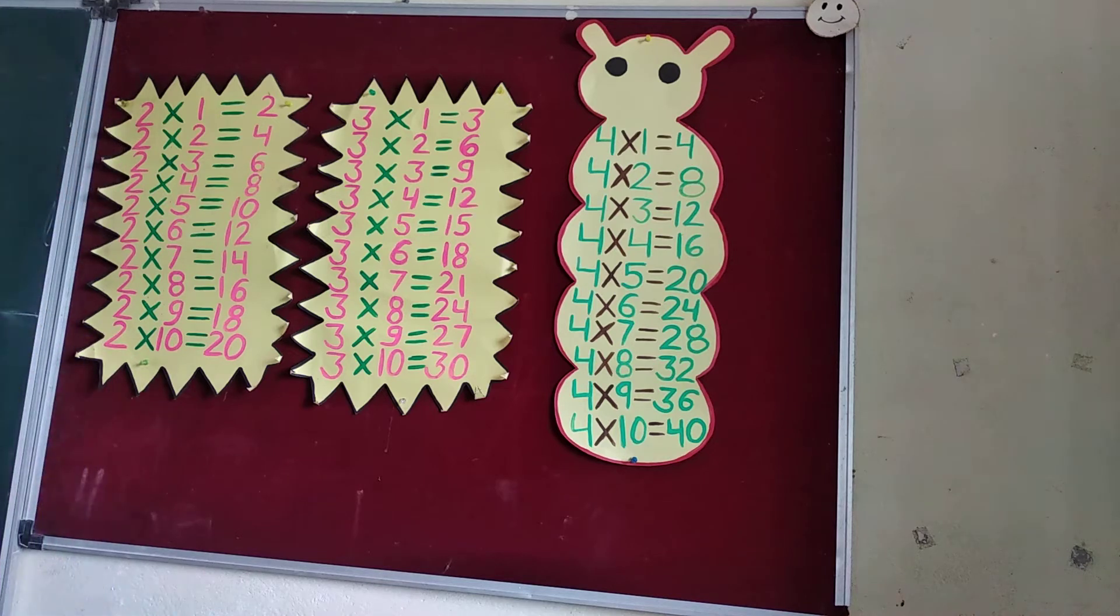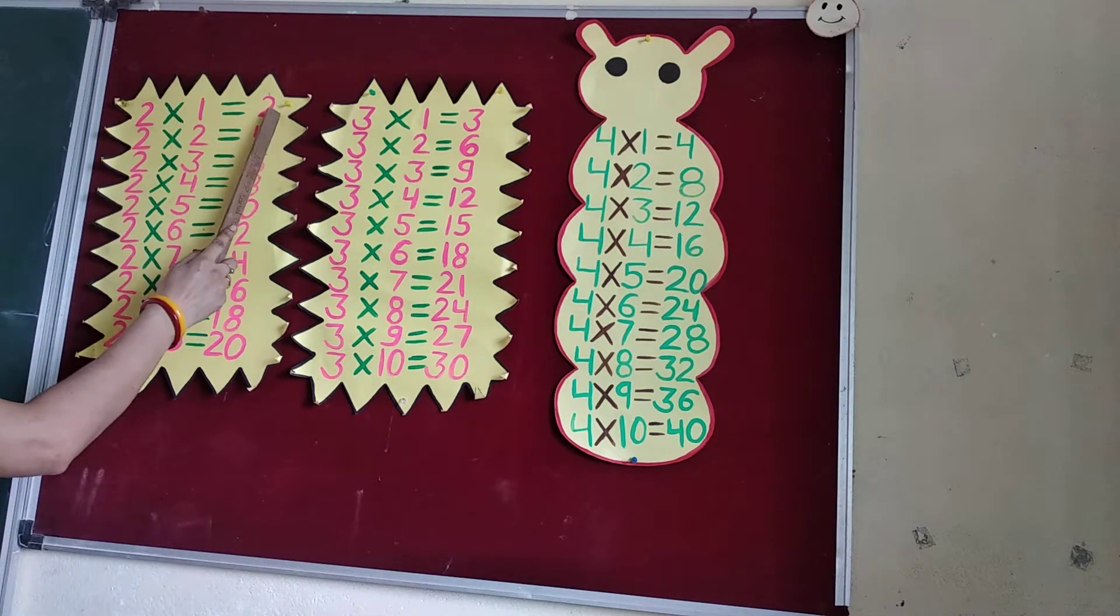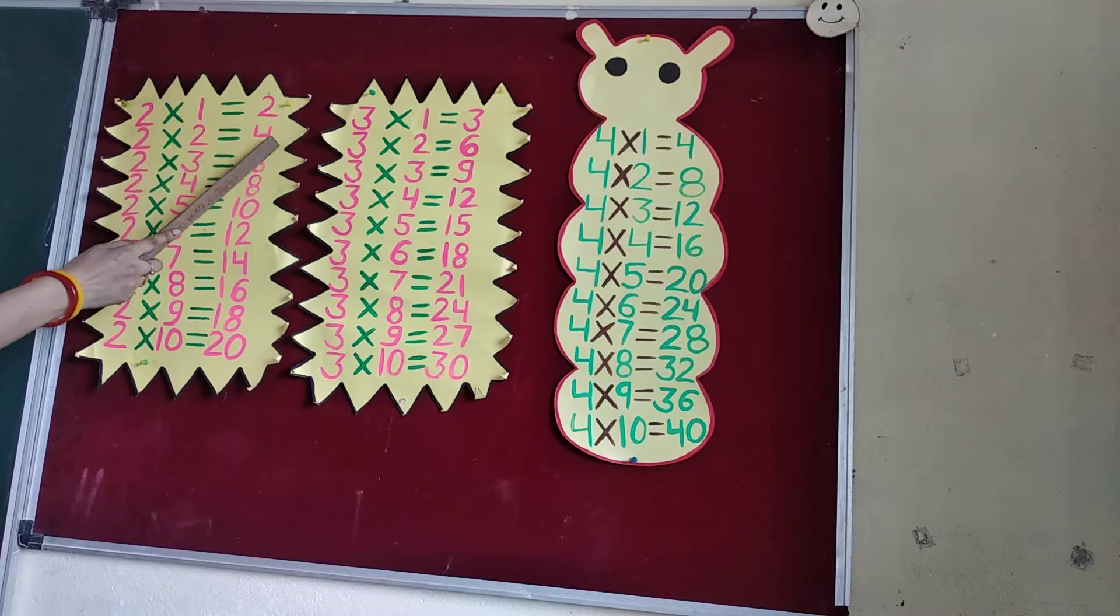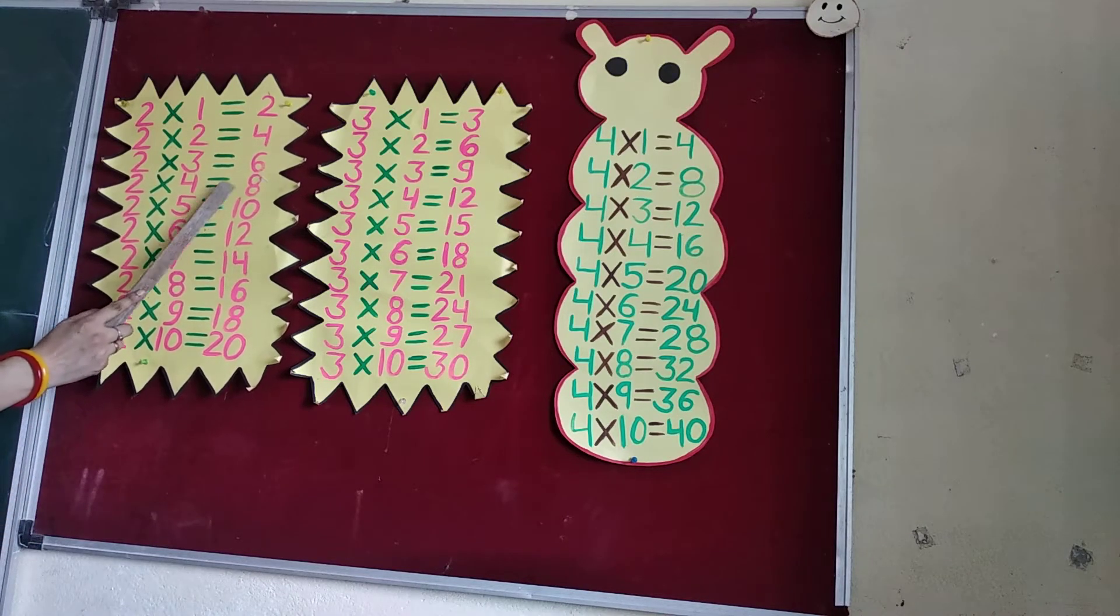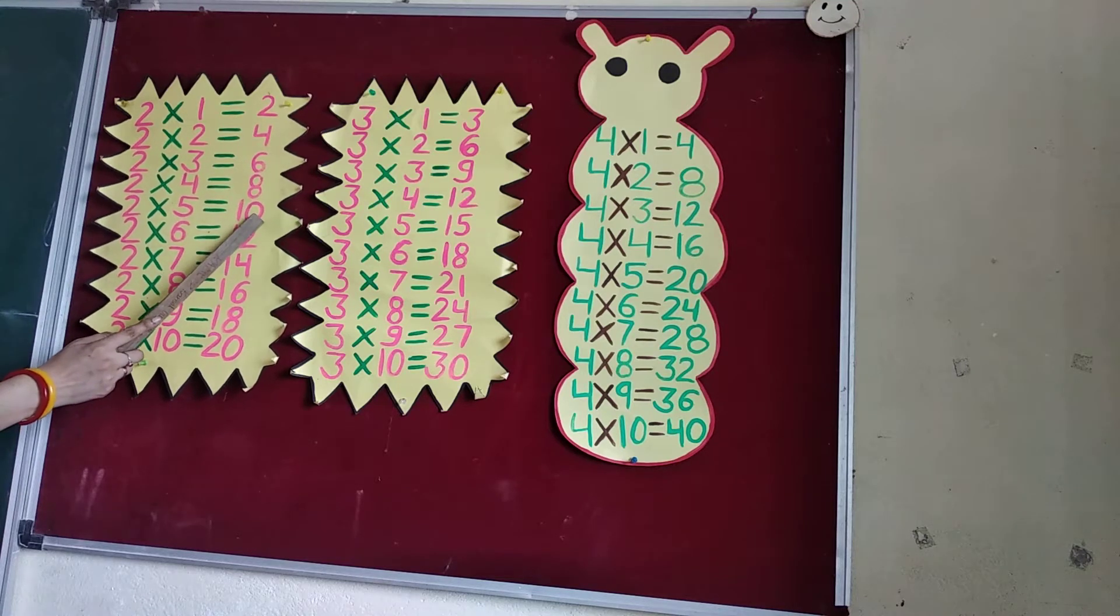All are ready? 2 1's are 2. 2 2's are 4. 2 3's are 6. 2 4's are 8. 2 5's are 10.